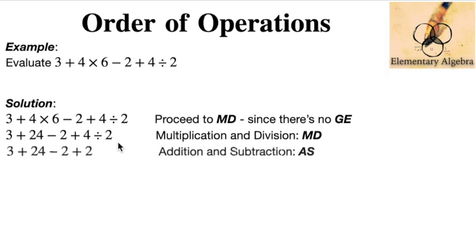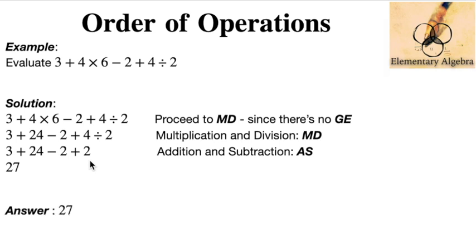Now we have got rid of all the multiplication and division, let's do the addition and subtraction from left to right. 3 plus 24 is going to give us 27, and that is now our answer to this example given.